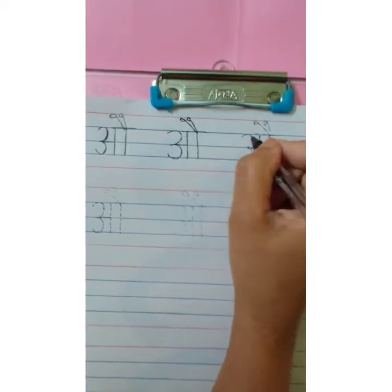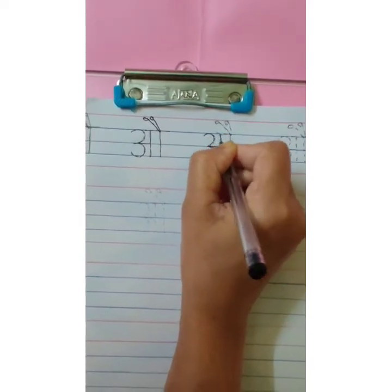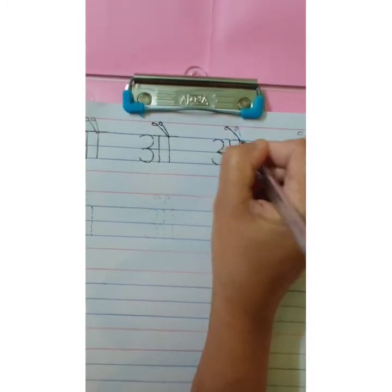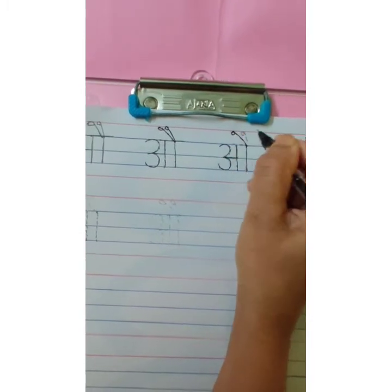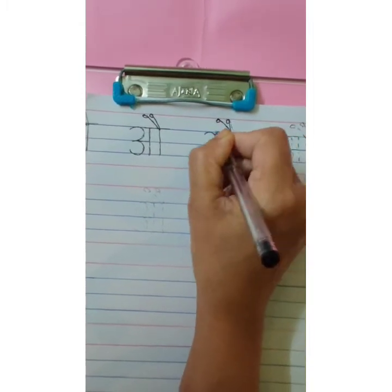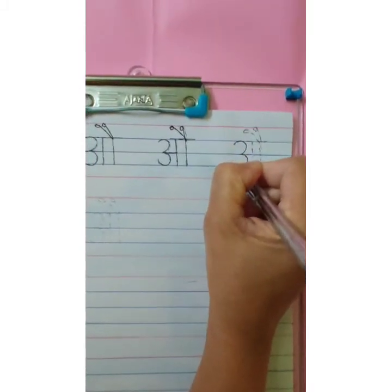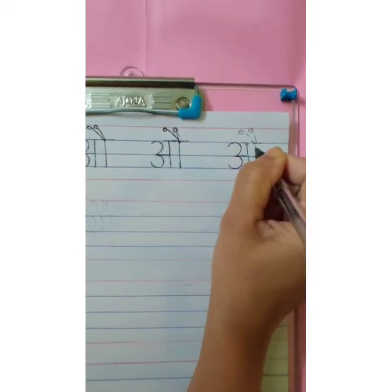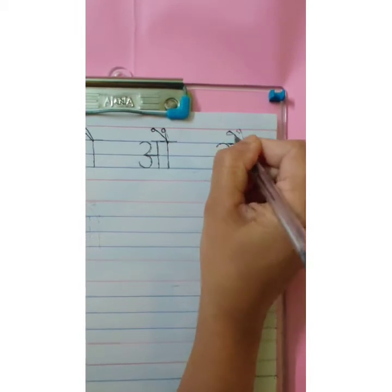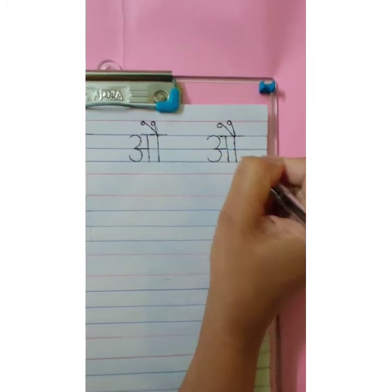AU. One more time. Write number 3, sleeping line, standing line — this is AU. One more standing line. Add matra on the second standing line, make a small curve, and one more matra on the same standing line. Overhead small sleeping line. AU. Write number 3, sleeping line, standing line, one more standing line, overall small sleeping line, then two slanting lines on the second standing line. AU.